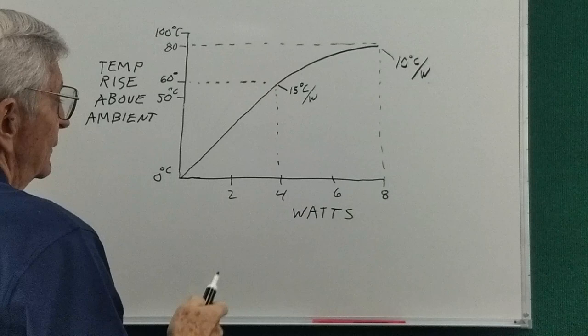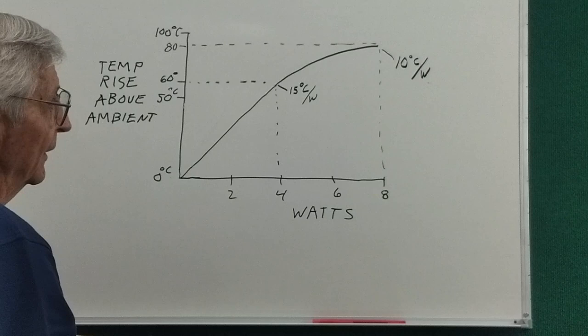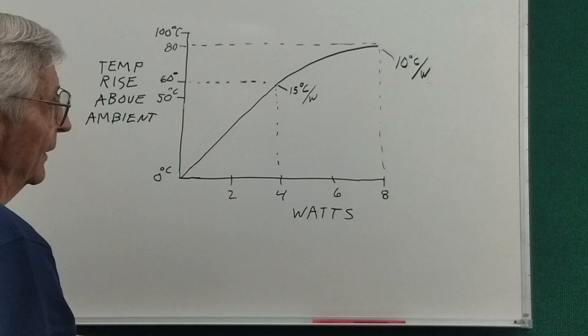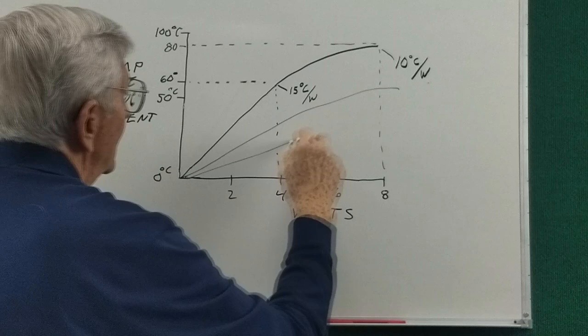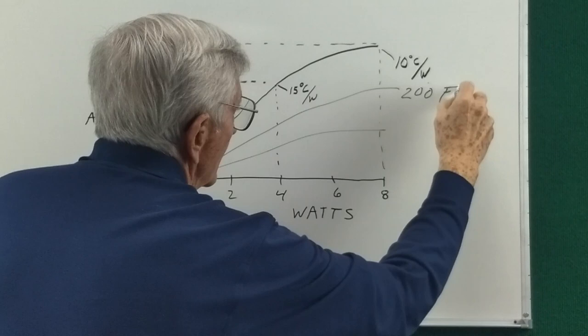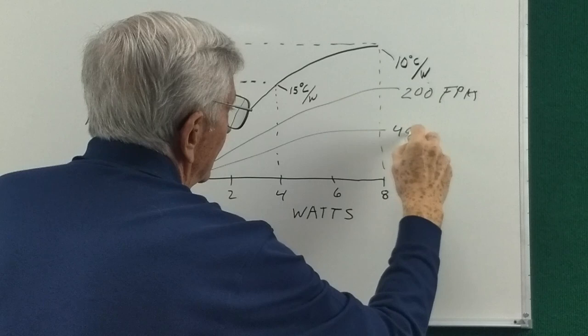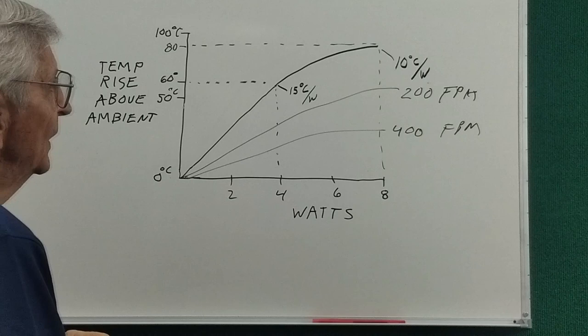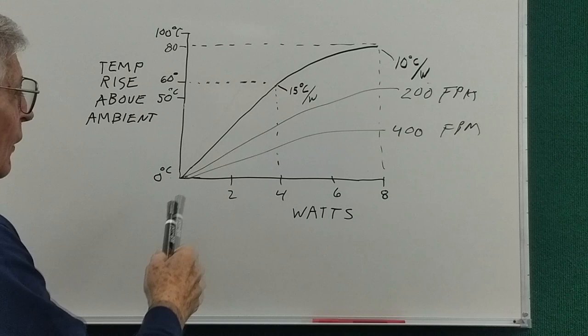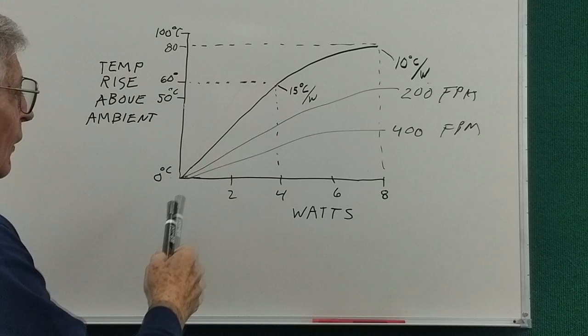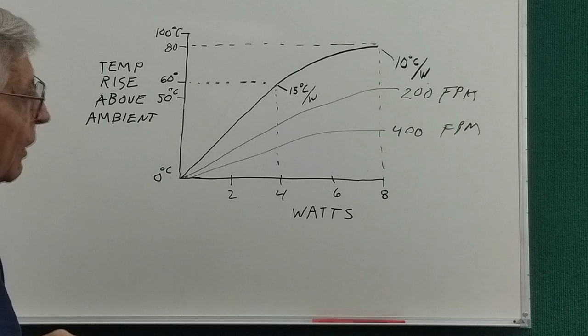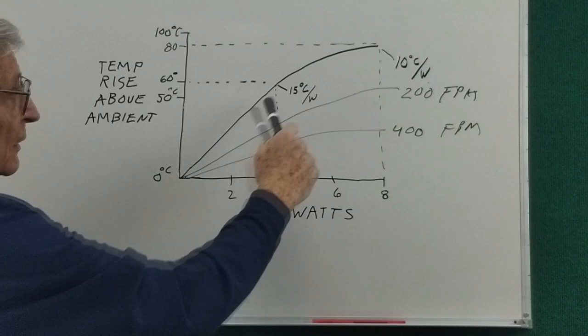So what temperature regime you're going to run in affects what the actual degrees C per watt is. Now also on their data sheet you may find some other curves. And that's feet per minute of air flow. So with air flow, you can of course cool much better. And the radiation has less effect. But you're always more reliable when you use just plain old convection cooling. Fans can fail and dirt can collect and clog things up. So generally the most reliable thing is convection cooling.